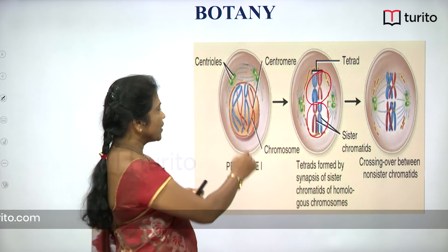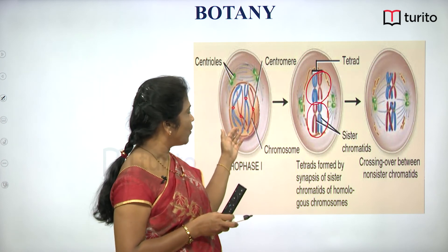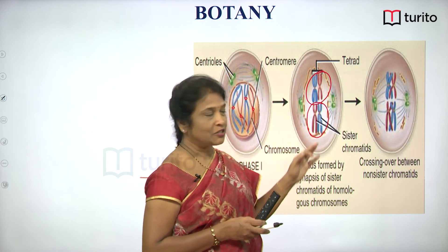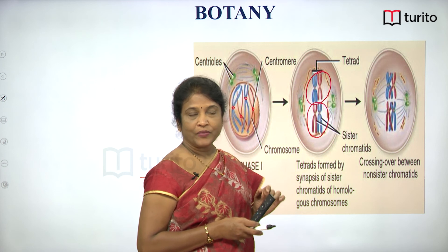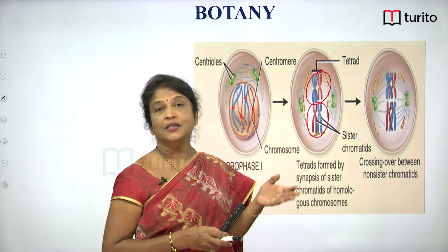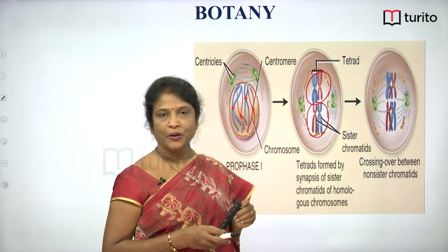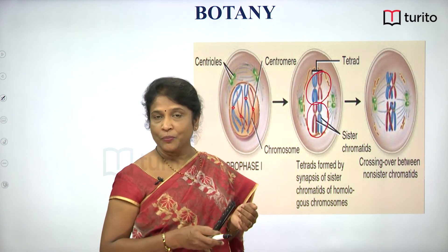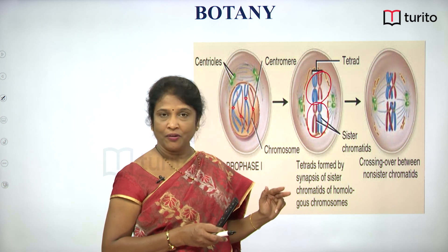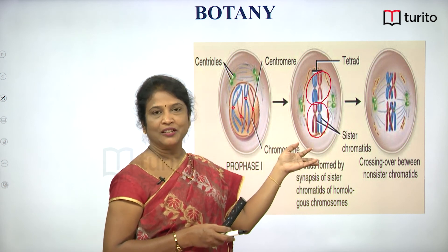In human gamete mother cells (meiocytes), 23 bivalents are possible — each bivalent with two chromosomes, but not just any two chromosomes. Only homologous pairs of chromosomes form a bivalent, by the process of synapsis during zygotene. During zygotene, the characteristic event that occurs is synapsis — pairing of homologous chromosomes with the help of the synaptonemal complex, a protein complex that holds the two homologous chromosomes along their length in a zipper fashion, finally forming the bivalents. That is about zygotene.